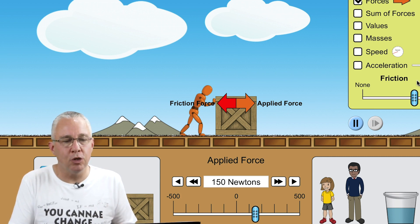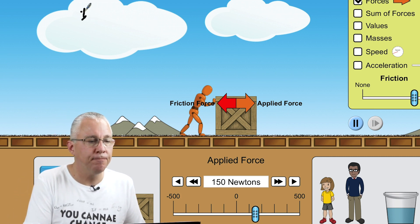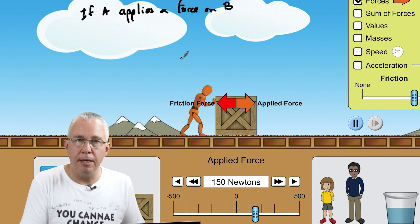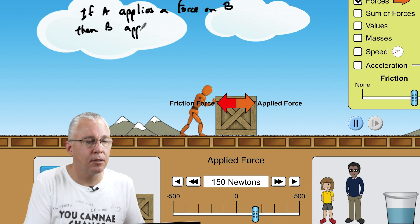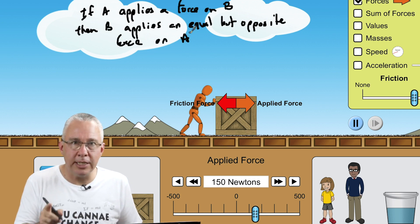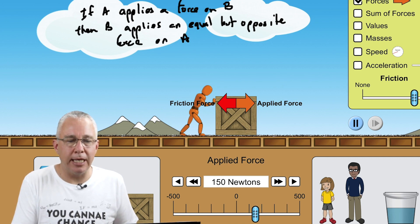Now Newton's Third Law says this: If A applies a force on B, then B applies an equal but opposite force on A. And strictly speaking, this is always true. Now let's explain that a bit further.